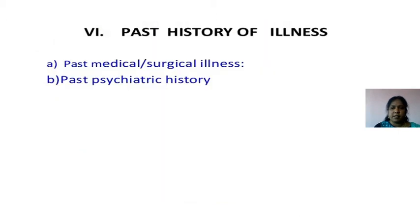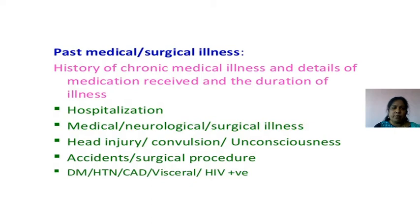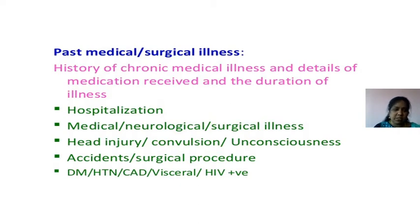Next, we are going to see the past history. In past history, we take past medical/surgical history and past psychiatric history in detail. In past medical/surgical illnesses, we collect: chronic medical illnesses, medication details, duration, any hospitalization, neurological problems, head injury, convulsions, unconsciousness, accidents, surgical procedures, and conditions such as diabetes, hypertension, cardiovascular problems, HIV, or visual problems.